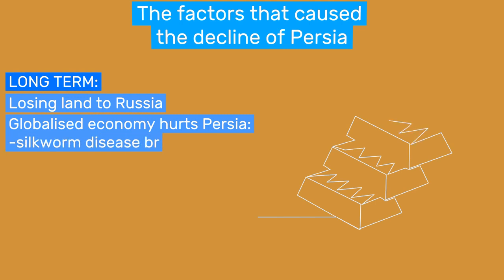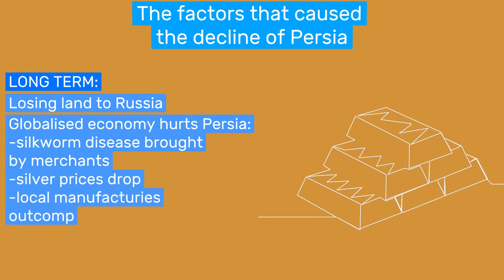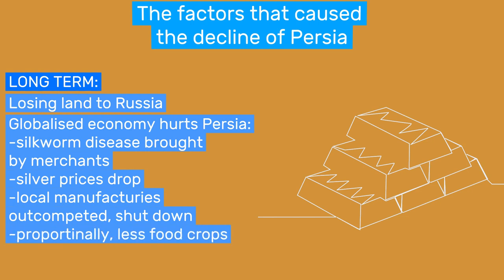Silkworm disease was brought in by merchants, which was bad for a country so reliant on the production of silk garments. Silver prices dropped steadily as mines opened across the New World, which led to the Persian silver currency becoming cheaper and cheaper. The market was not protected and flooded with cheap garments from abroad, which led to the closing of local manufactories. To pay for imported goods, agriculture shifted from food crops to cash crops like opium and tobacco. Coupled with a steadily rising population, food security was decreasing and poverty was on the rise.